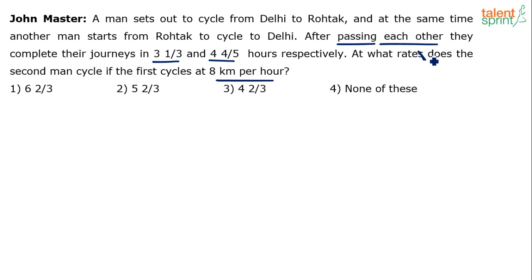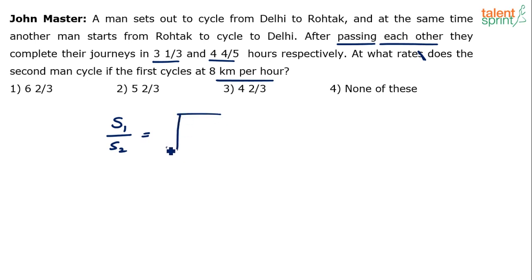At what speed does the second man cycle if the first one cycles at 8 kilometers per hour? This is a standard question from time and distance. The formula says: speed of the first person divided by speed of the second person equals the square root of time taken by the second person divided by time taken by the first person.